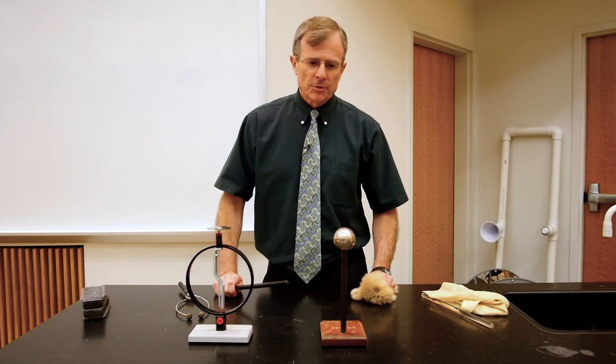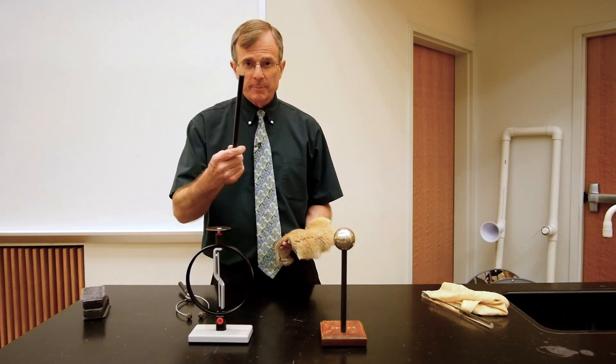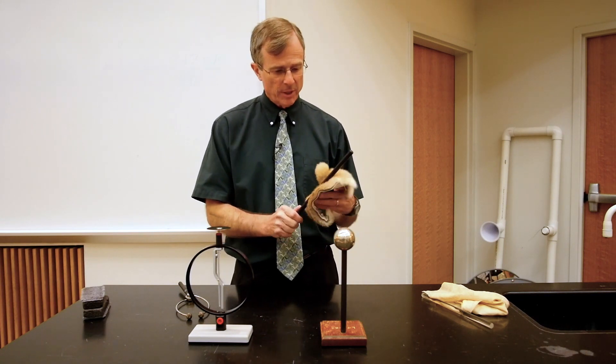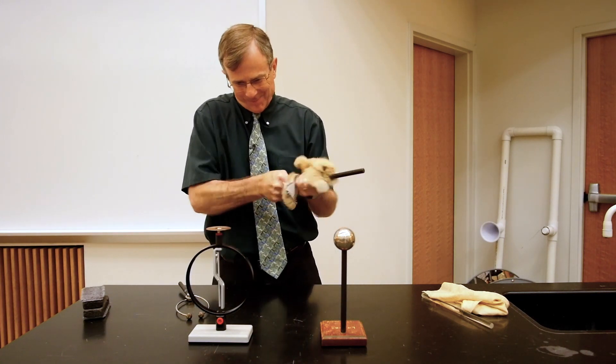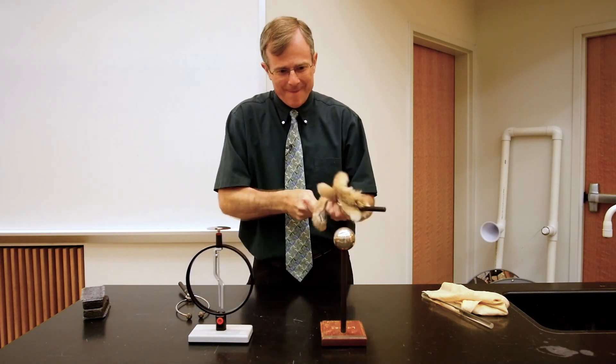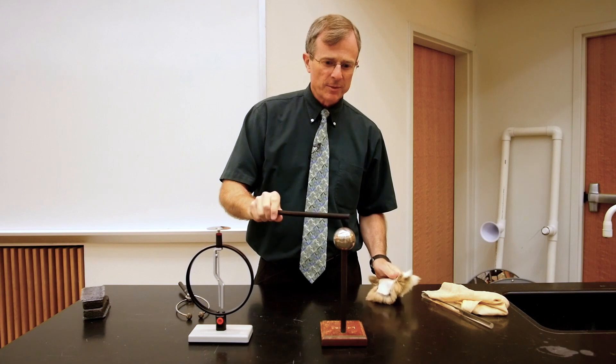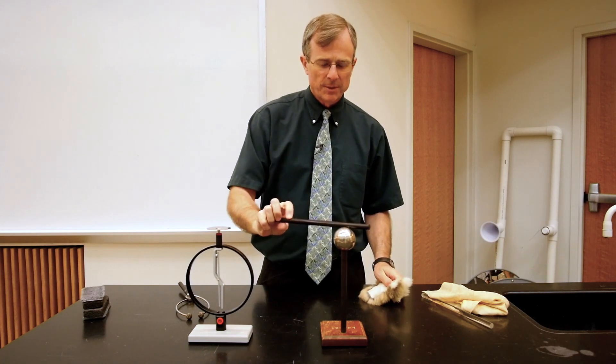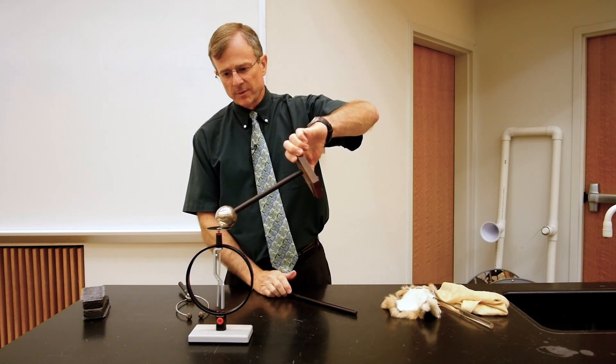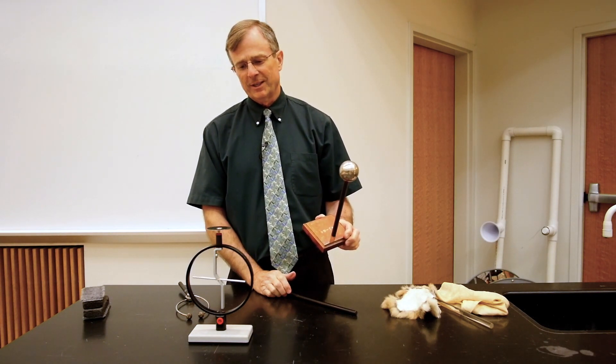Okay, we're going to charge this metal sphere by contact. I'm going to charge up this ebonite rod by rubbing some electrons off of the fur and onto the rod. I'm trying to get quite a good number of electrons on here. Then transfer them to the sphere and verify that we've done a transfer by measuring it with the Braun electroscope. So work like a charm.